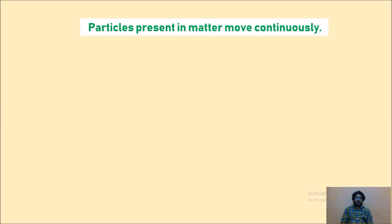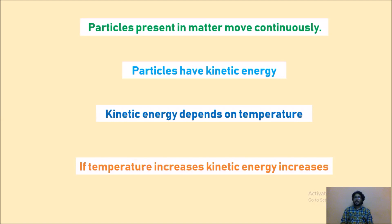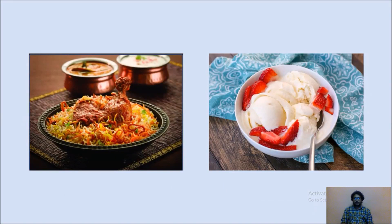A few more points: particles in matter always move continuously and therefore have kinetic energy. Kinetic energy depends on temperature — if temperature increases, kinetic energy also increases. For example, take biryani and an ice cream and stand one meter away from both. You would smell the biryani first because it is hot, meaning higher kinetic energy, so its particles move faster. You would need to go closer to smell the ice cream because it is cool and has lower kinetic energy.